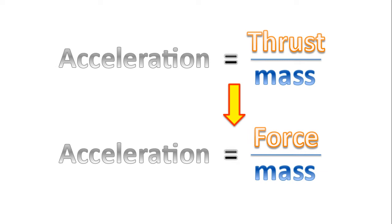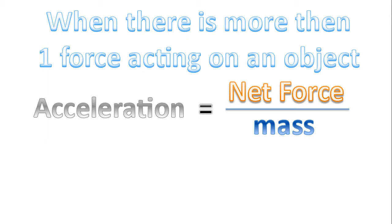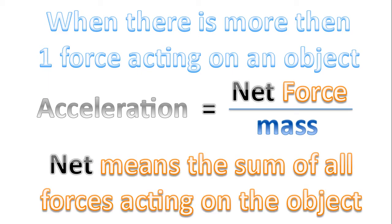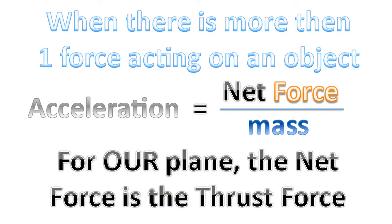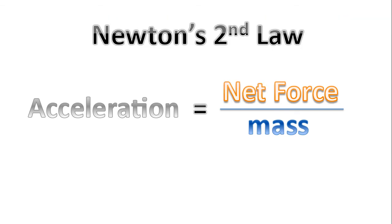Regardless of whether it's a plane taking off or any object experiencing a force, the most general equation is that acceleration equals force over mass. When there is more than one force acting on an object, we extend this to: acceleration equals net force over mass. Net means the sum of all the forces acting on the object. For our plane, the net force was just the thrust force, because that was the only force pushing the plane down the runway. This equation is formally known as Newton's Second Law.